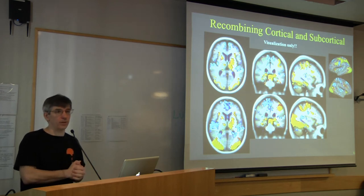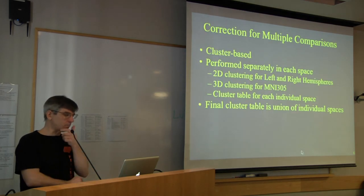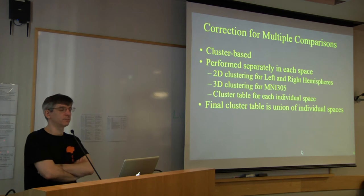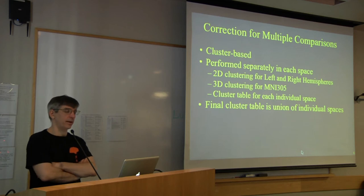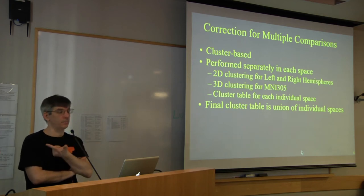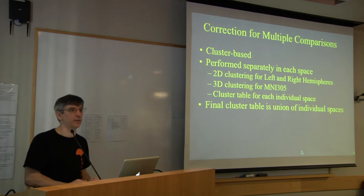Recombination is done purely for visualization — you can pack everything back into a volume for viewing and publication figures. But you would not correct this recombined map for multiple comparisons. Multiple comparisons correction is performed separately in each space (left hemisphere, right hemisphere, subcortical), producing a cluster table for each. Your final publication table is a union of all these individual tables.